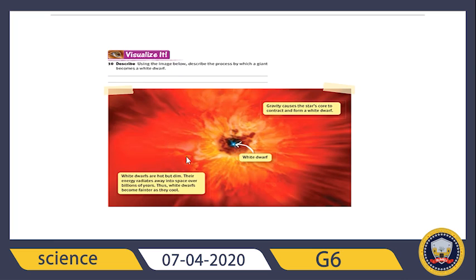As we said, the giant star's outer shell contains gases. Over time, the gases will drift away. The clouds will disperse, and because of that, the remaining matter in the star's core will collapse inward. The core will become denser and very hot. So gravity causes the star's core to contract and collapse, forming a white dwarf.